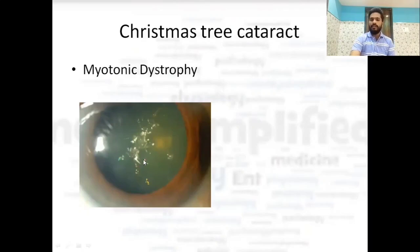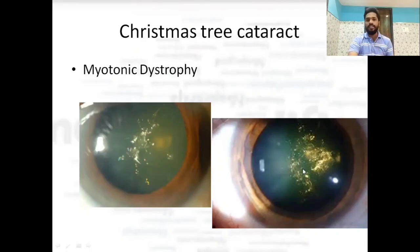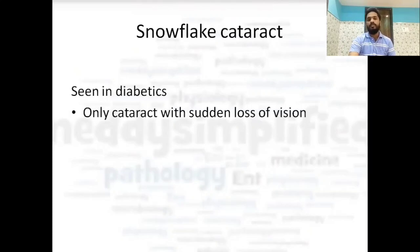Another image of Christmas tree cataract is shown for better orientation — you can see how it looks. Moving on to snowflake cataract, which is seen in diabetes.